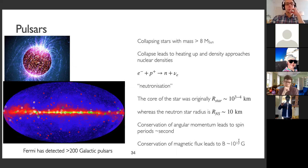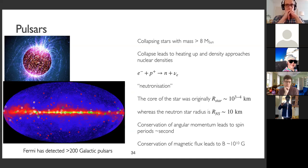In these extreme conditions, there are several possibilities to accelerate high energy particles, either in the electric field of the pulsar or in the pulsar wind — the remnant from when the star was losing material before it collapsed. There are shocks, and in principle particle acceleration can happen. Fermi has detected a few hundred pulsars in the past 10 years.